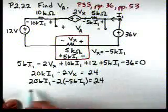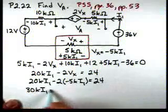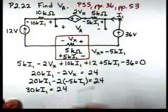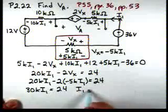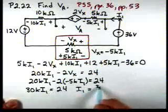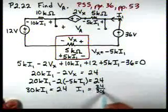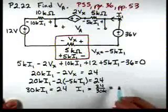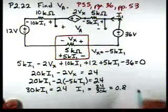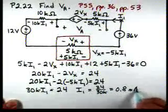We'll have 30Ki1 equal to 24. Therefore, I1 is 24 over 30K, or 0.8 milliamps.